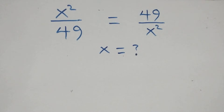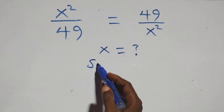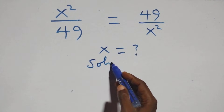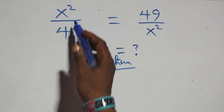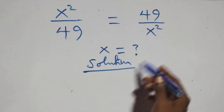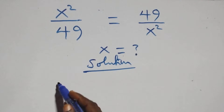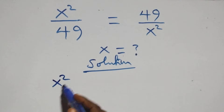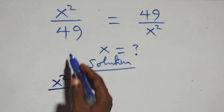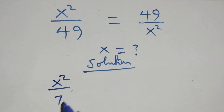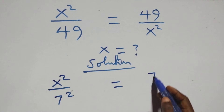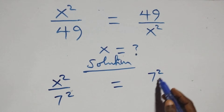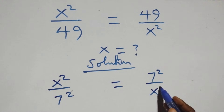Hello, you are welcome. How to solve this nice exponential equation. What we have here is x squared over 49 equals 14 over x squared. We can write 14 as 7 times 7, which is 7 squared, so it becomes x squared over 7 squared equals 7 squared over x squared.